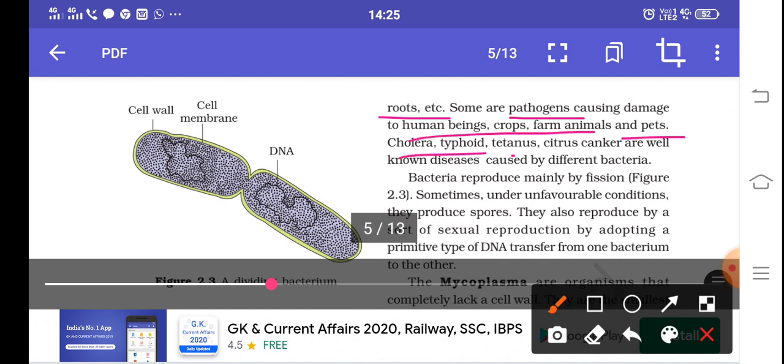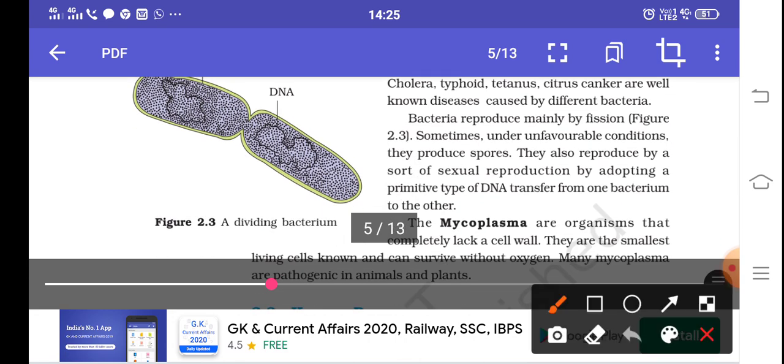Like cholera, typhoid, tetanus, and citrus canker. These are diseases caused by these bacteria. Now let's look at their mode of reproduction.